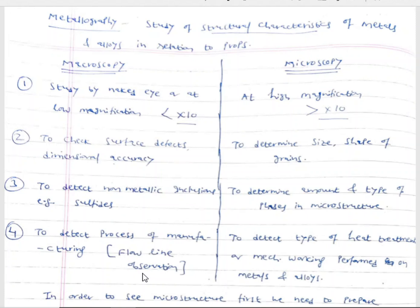Microscopic examination is useful to determine the amount and type of phases present in the microstructure. As we discussed under the head of phase diagram or equilibrium diagram, the application of the lever rule allows us to determine the amounts of different phases like eutectic, alpha, beta, etc. in the microstructure.